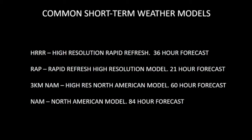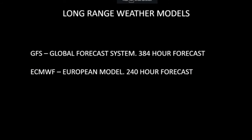The short-term weather models are higher resolution — they give you a better picture of what's going on. We have the HRRR, the High Resolution Rapid Refresh, which goes out 36 hours. You have the RAP, the Rapid Refresh high resolution model, which goes out 21 hours. The 3-kilometer NAM, the high-resolution North American model, goes out 60 hours. And you also have the NAM lower-res version that goes out 84 hours. These are the computer forecast models you may use if you're planning a trip the next couple of days.